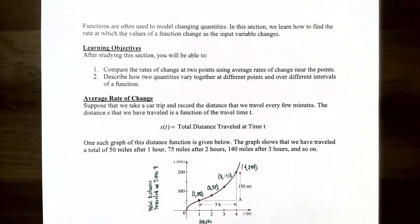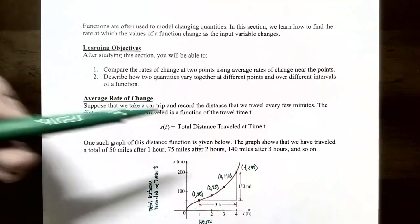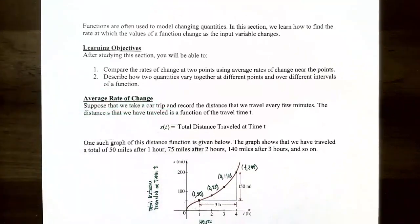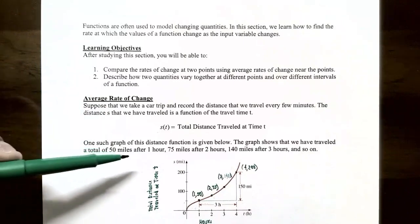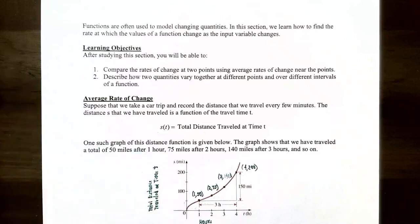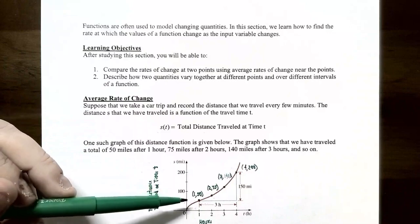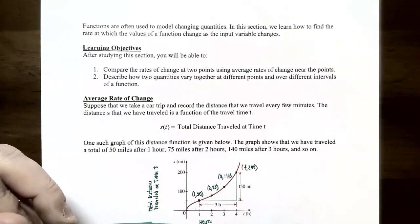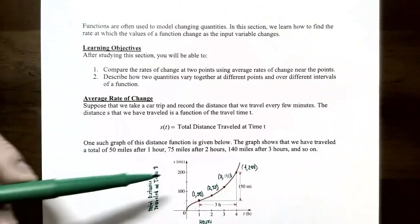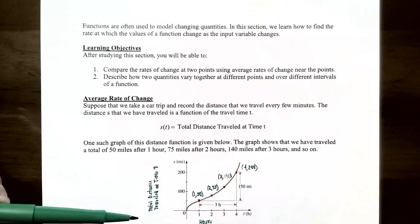One example about average rate of change is something you're very familiar with. Let's say we take a car trip and record the distance we travel every few minutes. The distance is represented as lowercase s, the function, and travel time as lowercase t, the input variable. So s of t calculates the total distance traveled at time t. The graph shows we've traveled 50 miles after one hour, 75 miles after two hours, 140 miles after three hours, and 200 miles after four hours. The horizontal axis represents time in hours and the vertical axis represents s in miles.